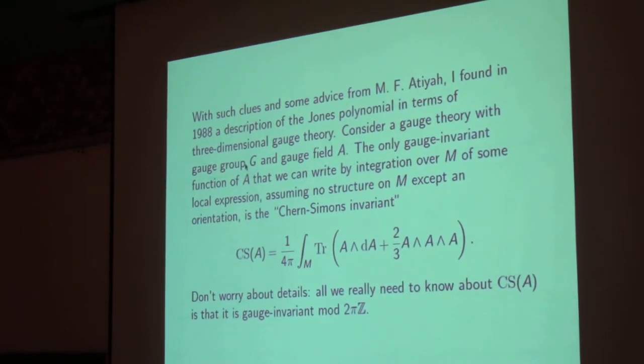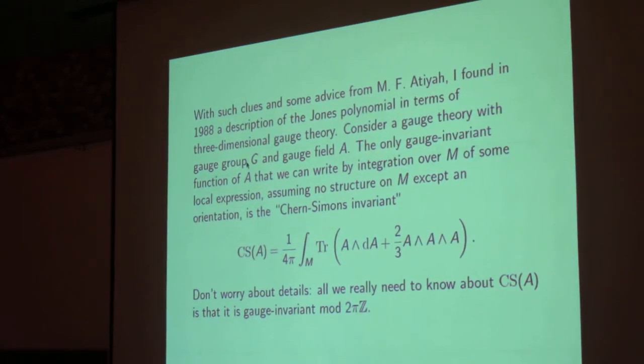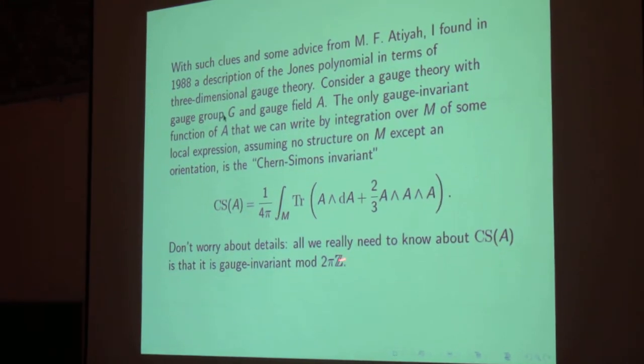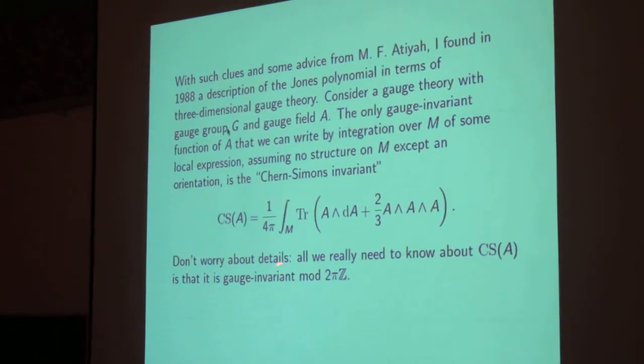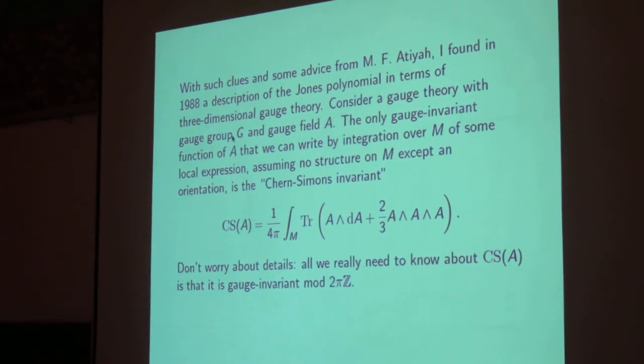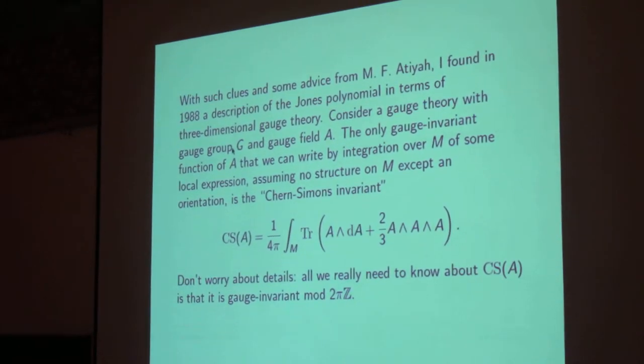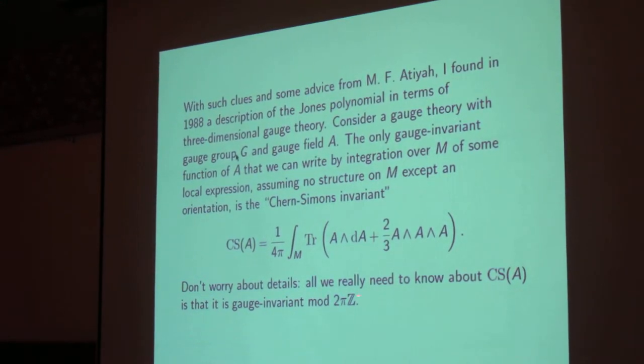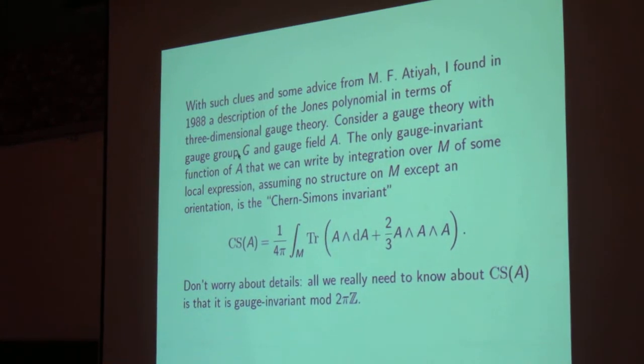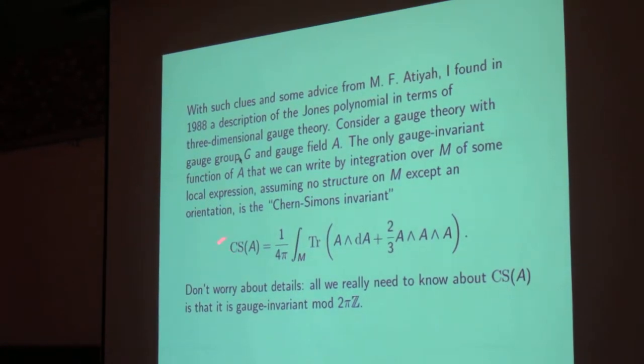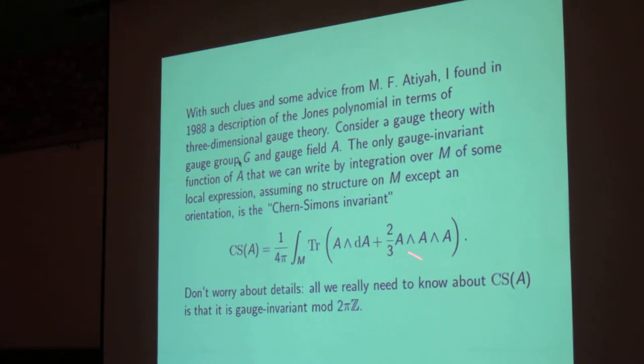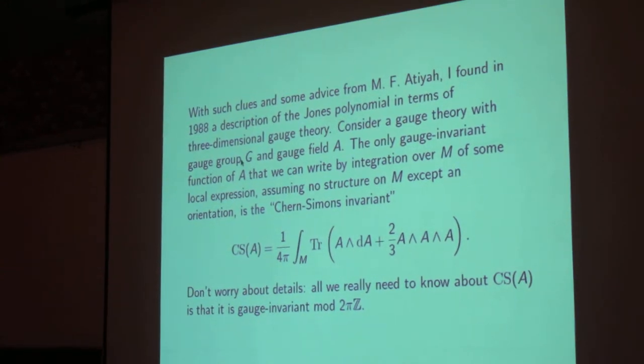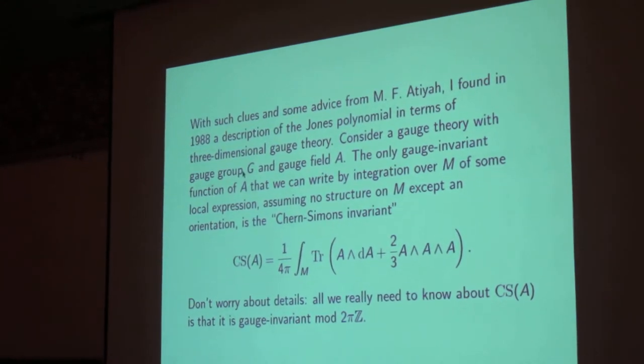So if we're trying to write a gauge-invariant local function of a gauge field that we can define by integration over M of some local expression, where there's no metric to help us, we only have an orientation, there's only one such function, which is the Chern-Simons invariant of the gauge field. And it'll be familiar to many particle theorists and condensed matter theorists, but if you're not familiar with it, don't worry about it. For this lecture, you don't need to know anything about it except that it's gauge-invariant, well it's almost gauge-invariant. It's invariant under gauge transformations that are continuously connected to the identity, but there are so-called big gauge transformations under which this function jumps by 2π times an integer.